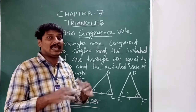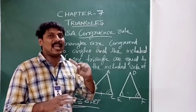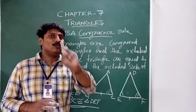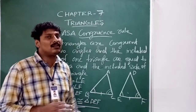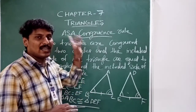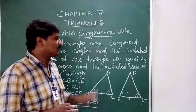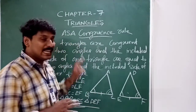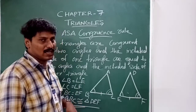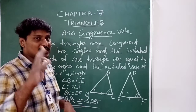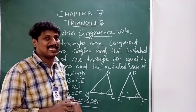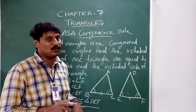ASA: Angle Side Angle congruency. And SAS: Side Angle Side congruency. These are the two congruency modes covered.